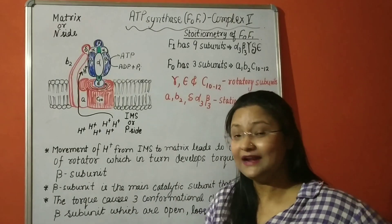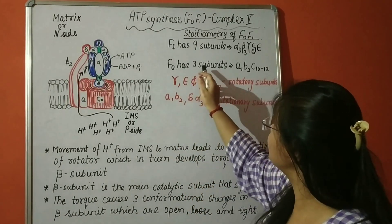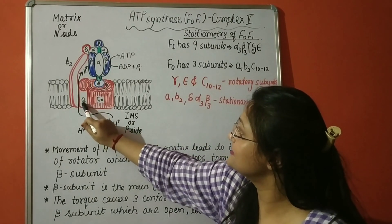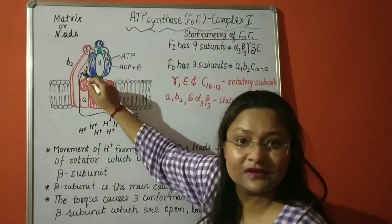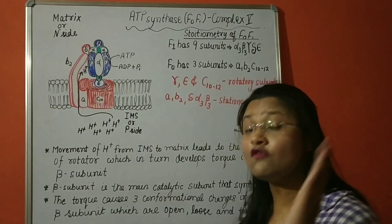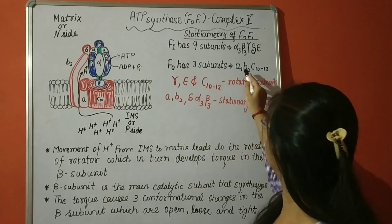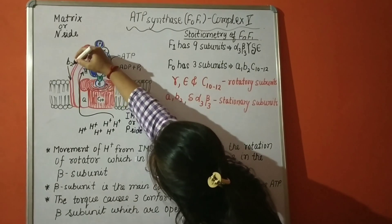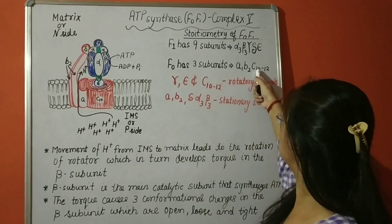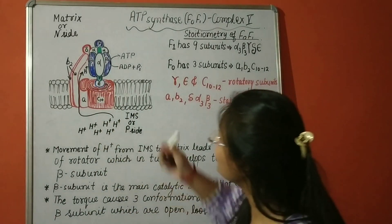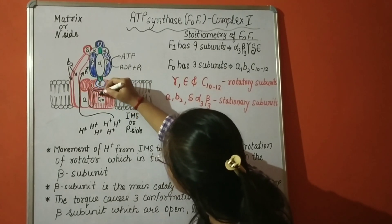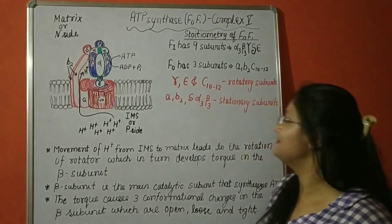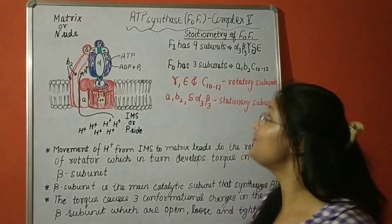Now let us have a look at F0 subunit of ATP synthase which has further 3 subunits: A, B and C. A subunit is only 1. This is A subunit from where H+ moves for movement of H+ from IMS to matrix. And B2, 1 and 2. They both are B2 subunits. And C, 10 to 12 subunits. This portion has like 10 subunits. That's about the structure of ATP synthase, F0 and F1, or complex 5.